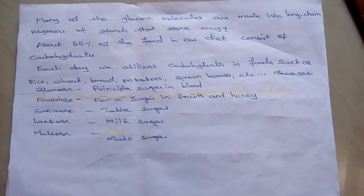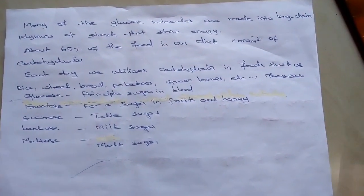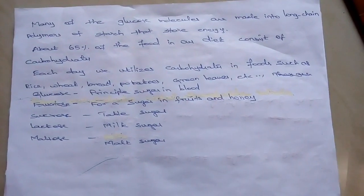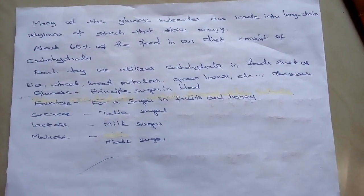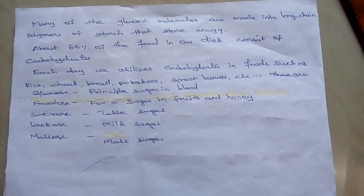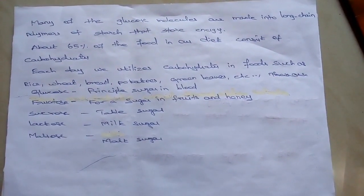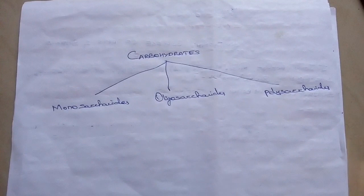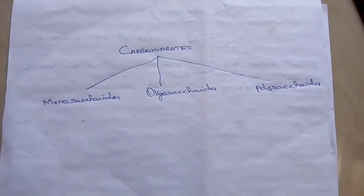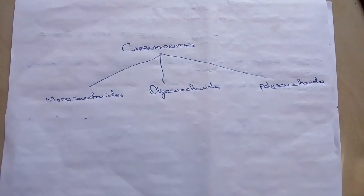Glucose is the principal sugar in blood. Fructose is the sugar in fruits and honey. Sucrose is a table sugar. Lactose is also present as milk sugar. Maltose is present in malt sugar. Carbohydrates is classified into three subunits: monosaccharides, oligosaccharides, and polysaccharides.